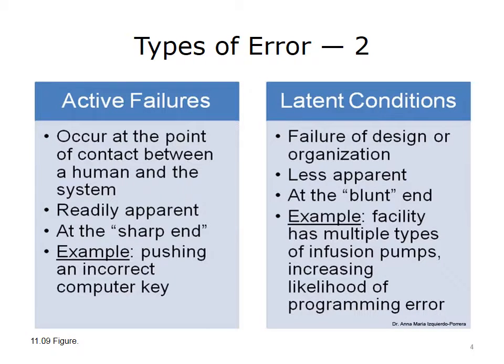Another way to classify errors has been proposed by James Reason. Reason describes active failures and latent conditions. Active failures occur at the point of contact between a person and the system — we refer to these as failures at the sharp end. They are usually readily apparent. Examples include pushing an incorrect computer key or ignoring a warning light. Latent conditions represent failure of system design or organization — conditions at the blunt end — and are less apparent.